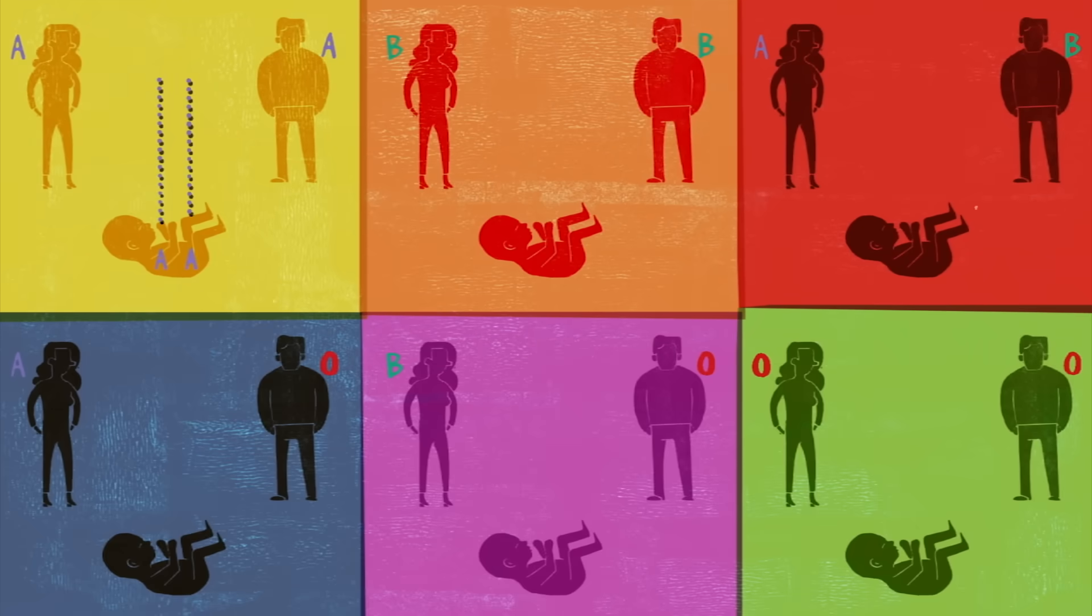Because of these interactions, knowing both parents' blood types lets us predict the relative probability of their children's blood types.